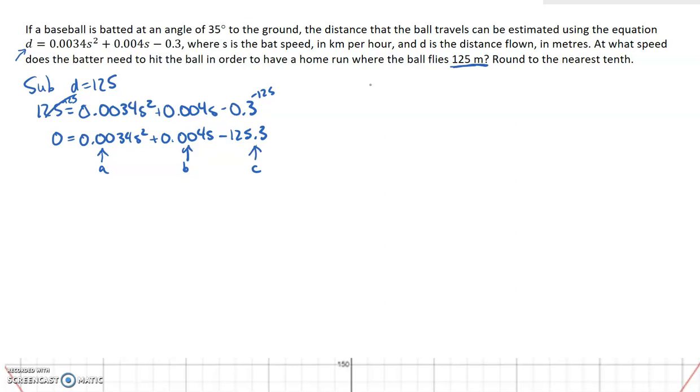So let's go ahead and sub those into the quadratic formula. In this case, the independent variable is s. So I'm going to write s equals, not x equals, because x is not the independent variable: negative b plus minus the square root of b squared minus 4ac divided by 2a.